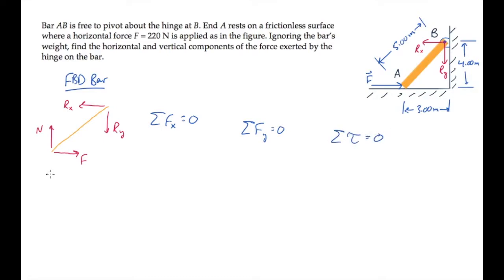In the x direction, there are two forces. So we have the force F minus the x component of that hinge force equaling zero, which tells us that Rx equals the force F. That's 220 newtons.